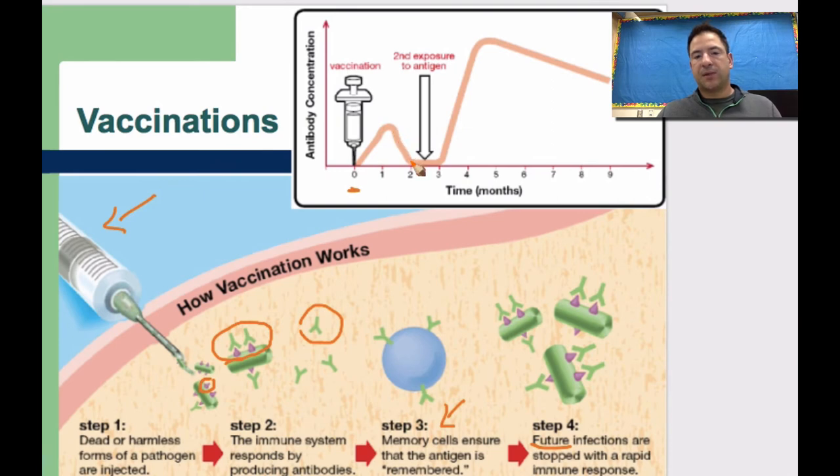And then so now we see a dip in the antibody concentration. So now, here's our second exposure to that same pathogen. Now look what happens after we had the vaccination at this point. Now because these memory cells right here have remembered that, now what happens is it initiates a rapid immune response. And that's what this spike going up is.